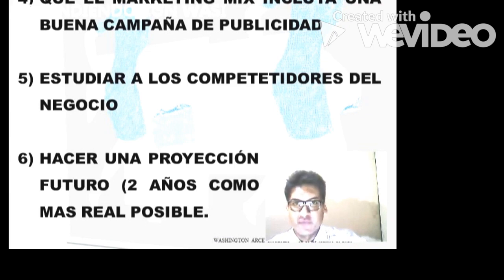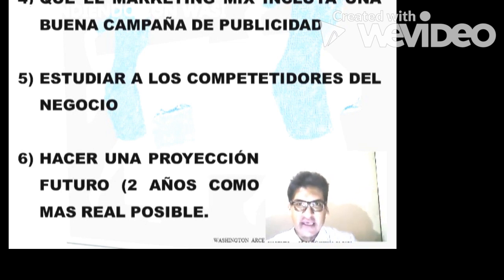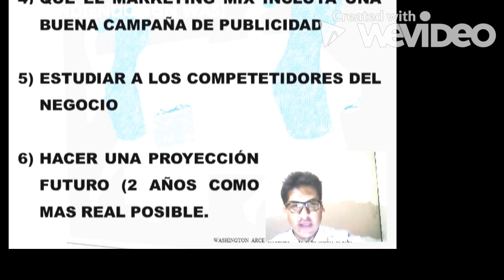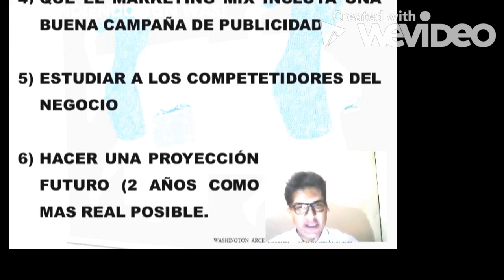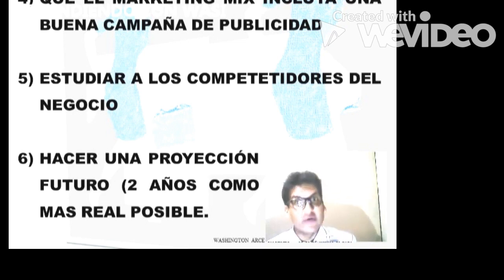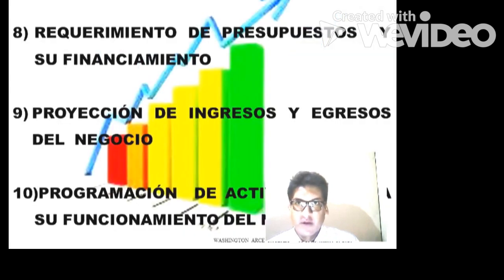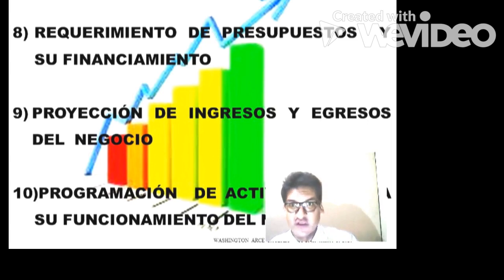Ahora vamos a entrar en el tema importante que es el marketing mix. El marketing mix incluye una buena campaña de publicidad, estudiar a los competidores del negocio, hacer una proyección a futuro, una proyección de ventas. Lo más real es hacer una proyección para mínimo dos años. Es bueno ubicar qué productos tiene, a qué precio los ofrece, y estimar una proyección de venta de 24 meses. También podemos hacer una organización del negocio donde vamos a colocar los presupuestos y el financiamiento.